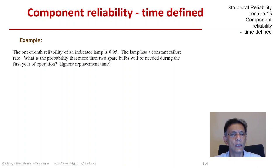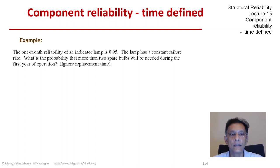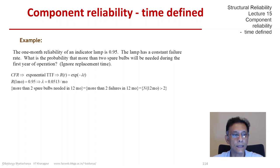The probability that more than two spare bulbs will be needed means we are looking at sums of independent exponentials — the gamma Erlang distribution — which we are going to solve using the Poisson PMF, all of which we derived in the previous slide.